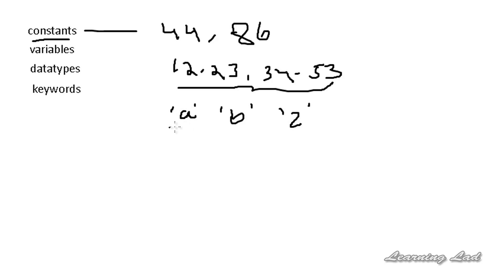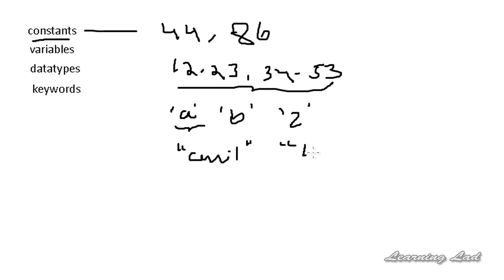A character constant is a single character and it is written in single quotes. And then we have string constants, which are written in double quotes and which are a bunch of characters. These are called string constants.